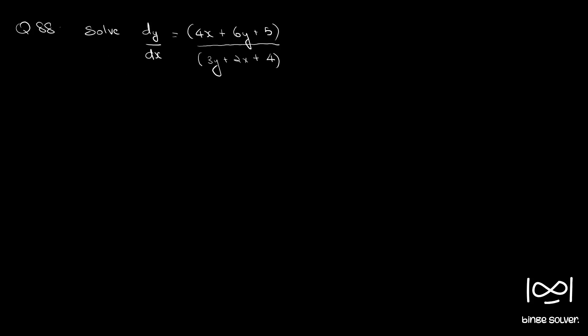We can simplify this. If you take a 2 out, you get dy/dx equal to (2x + 3y + 5/2) / (2x + 3y + 4). Wait — that simplifies to 2(2x + 3y) + 5 over (2x + 3y + 4). This is in the substitution formula form.